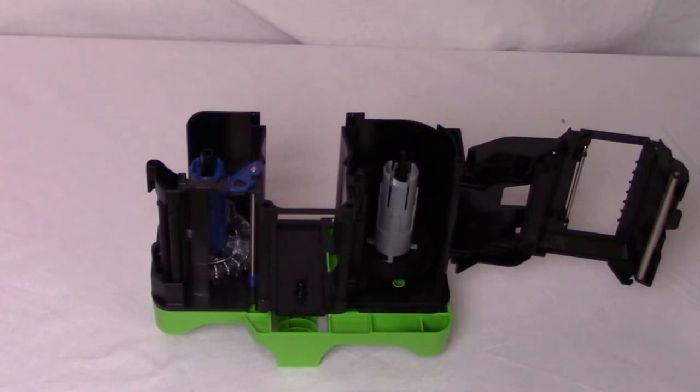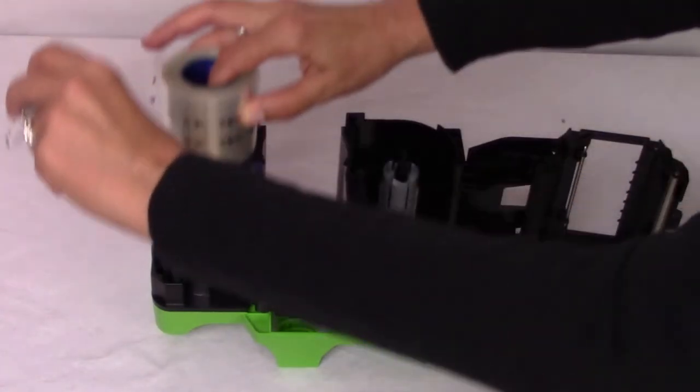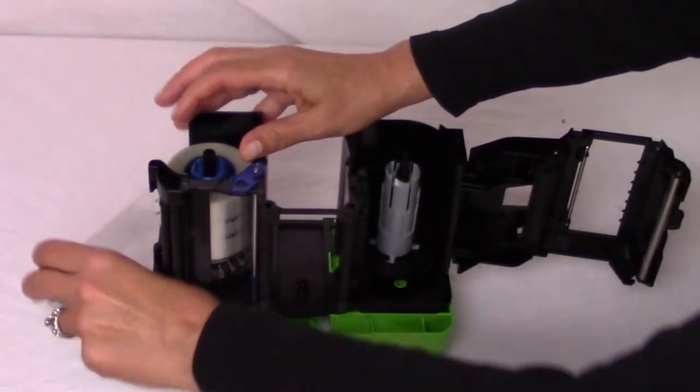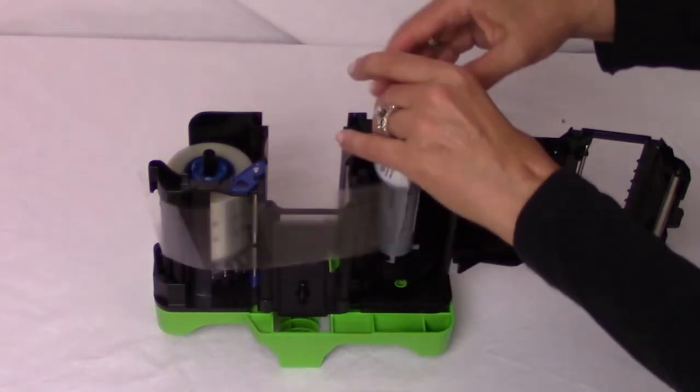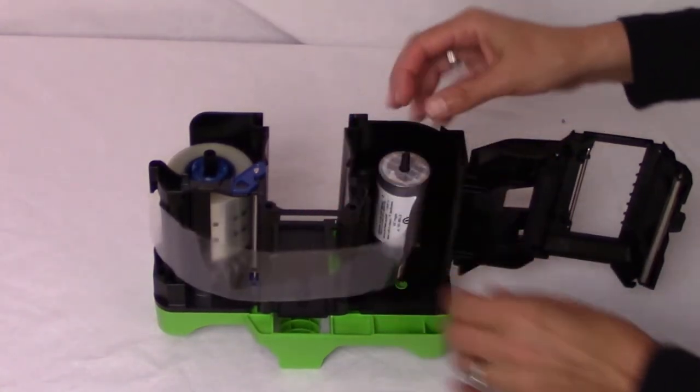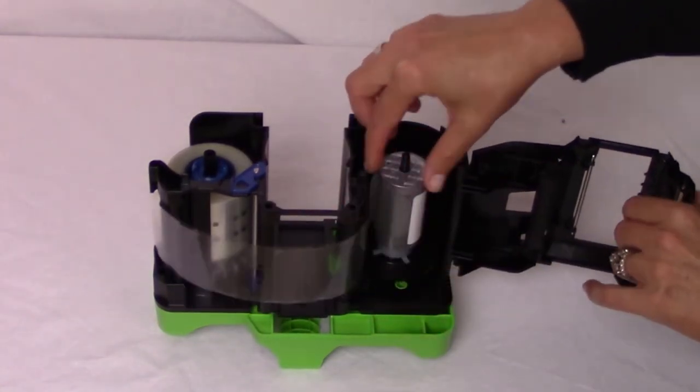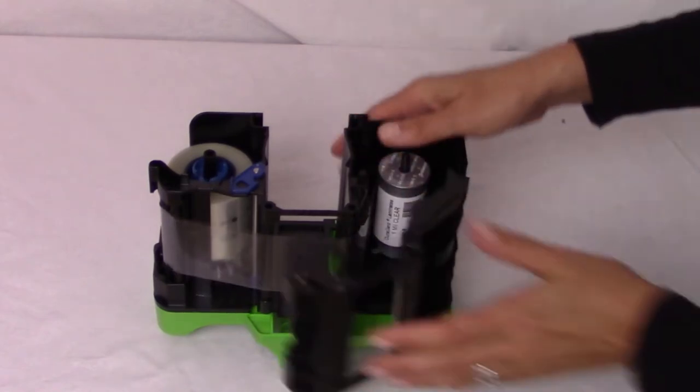Put the supply spool on the matching colored spindle of the cartridge. Make sure the spool clicks into place. Put the empty take-up spool on the take-up spindle. Turn the take-up spool clockwise to remove slack from the material.